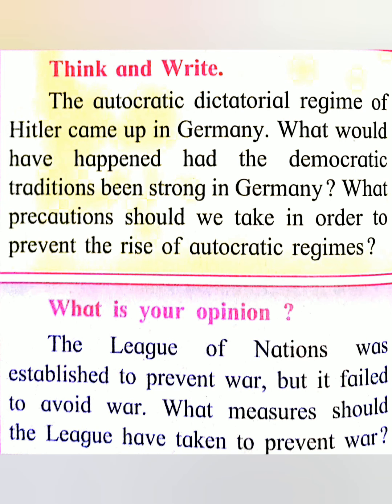Now for a 'Think and Write' activity: The autocratic dictatorial regime of Hitler came up in Germany — what would have happened had democratic traditions been stronger in Germany? What precautions should we take to prevent the rise of autocratic regimes? Also, the League of Nations was established to prevent war but failed — what measures should the League have taken? Please find the answers through the internet.